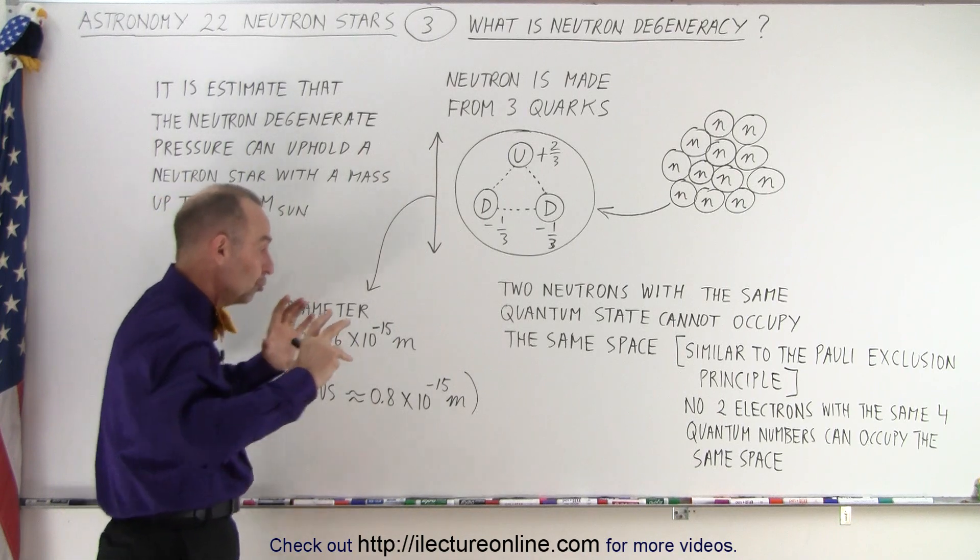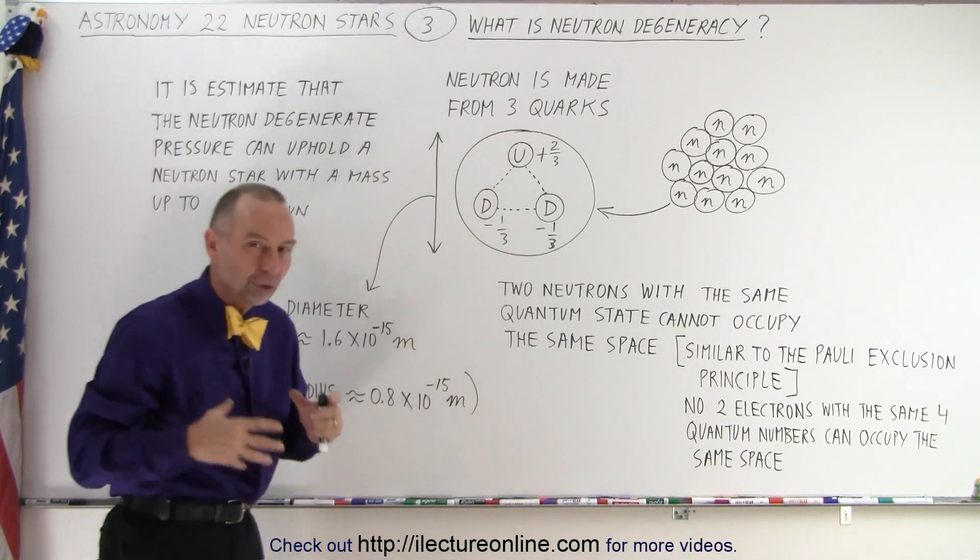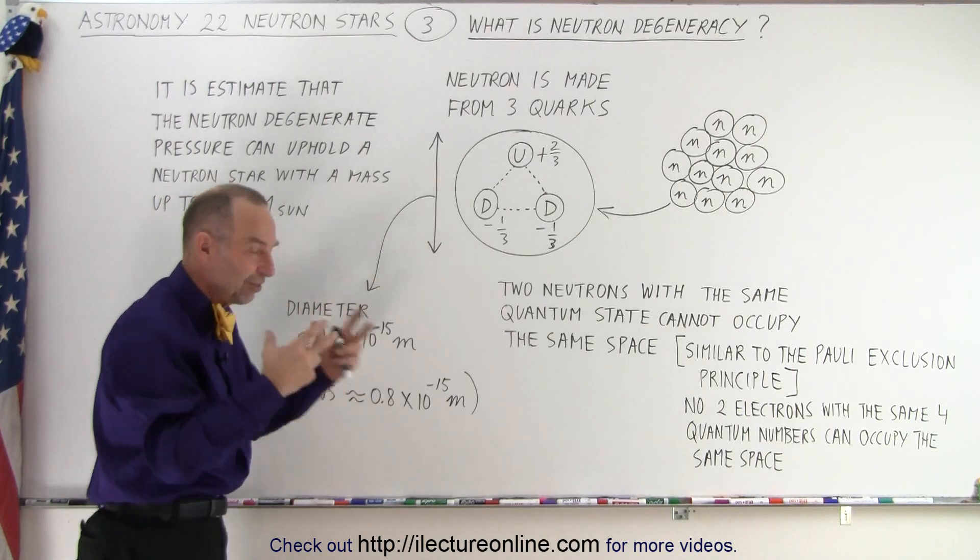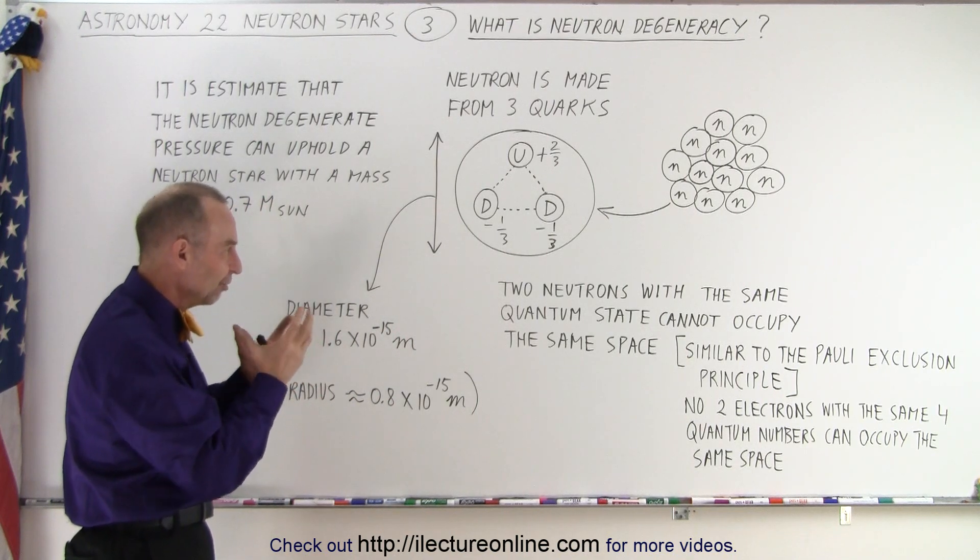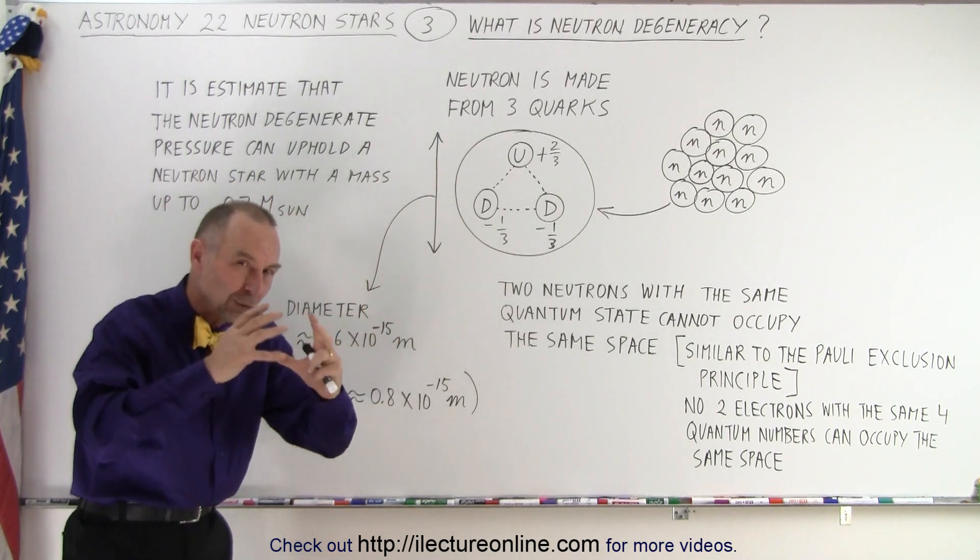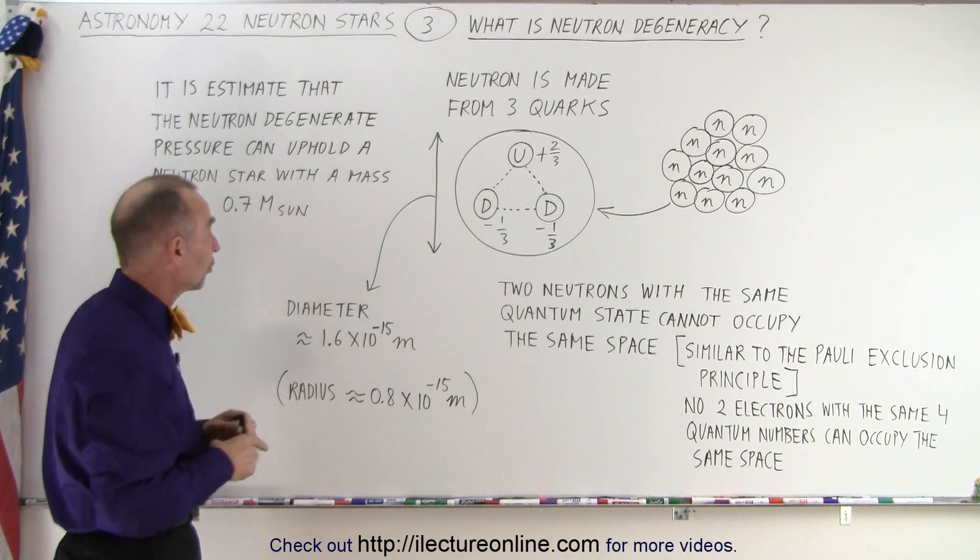When you try to push two neutrons together, you also have to fight against the forces of the quarks, which actually go beyond the boundary of the quark itself. So there will become an interaction there. And so that's part of the principle that you cannot push two quarks in the same space. So that's part of what arrests the collapse of a core when a supernova explosion occurs.